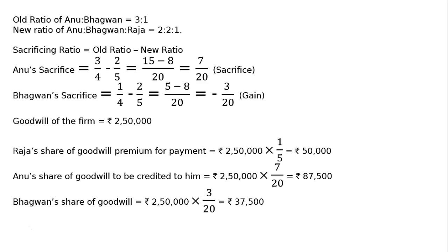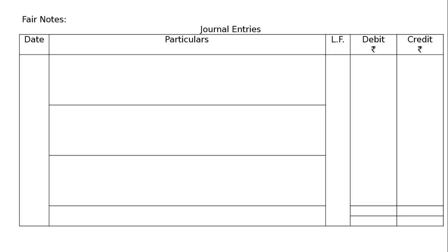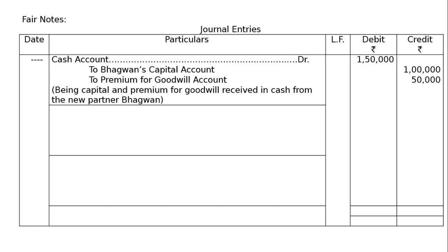Bhagwan's share of goodwill equals Rs. 2,50,000 multiplied by 3/20, which equals Rs. 37,500. Therefore, in the journal entries, we will draw the proper journal. The first entry will be: Cash Account debited Rs. 1,50,000 — to Bhagwan's Capital Account Rs. 1,00,000 and to Premium for Goodwill Account Rs. 50,000.